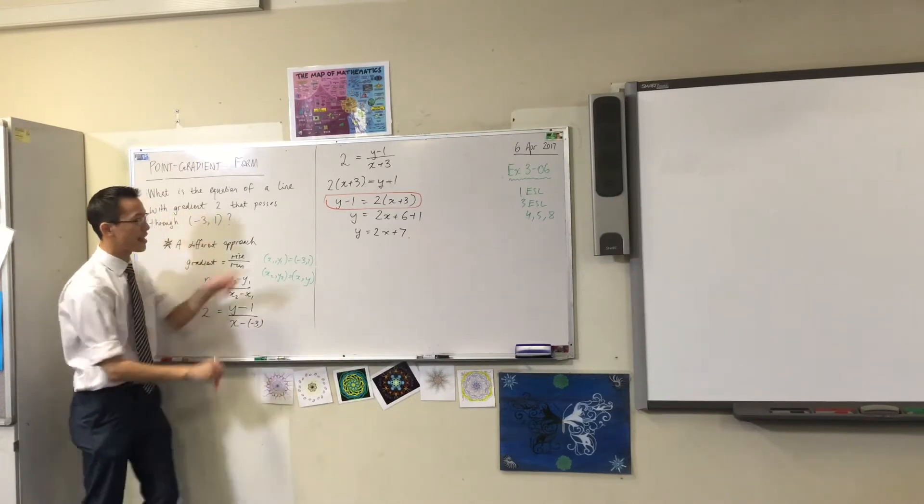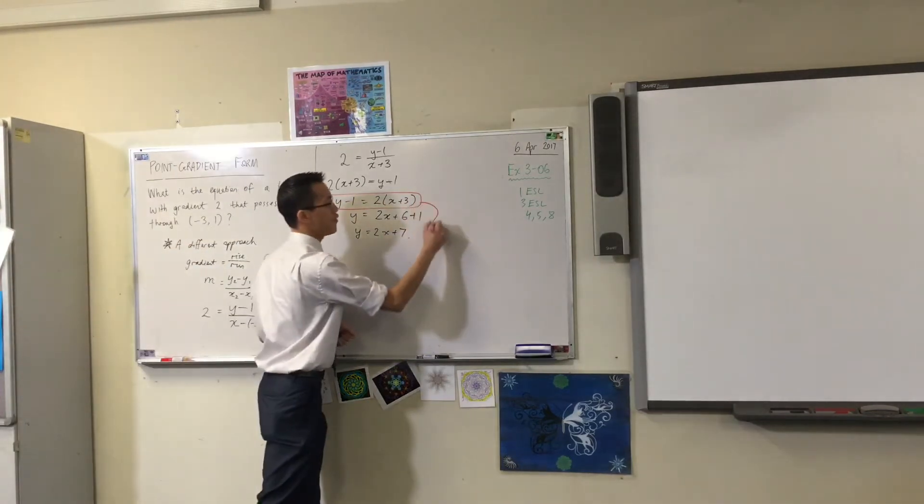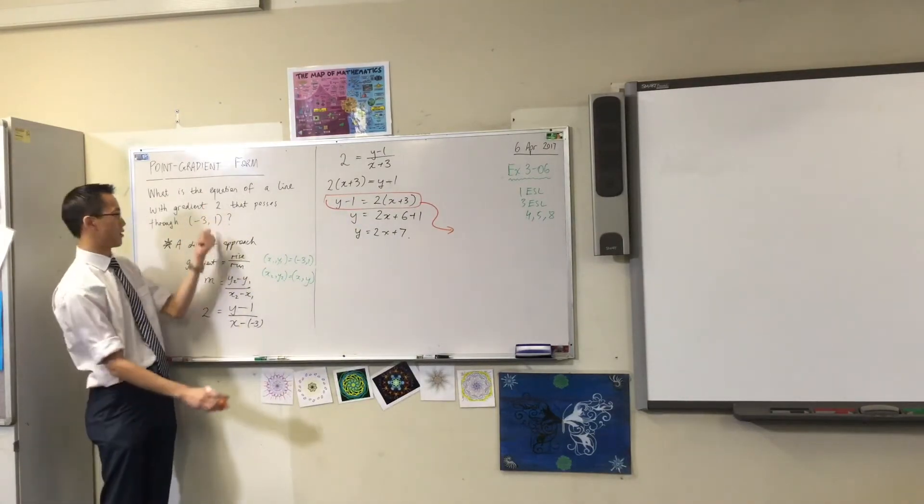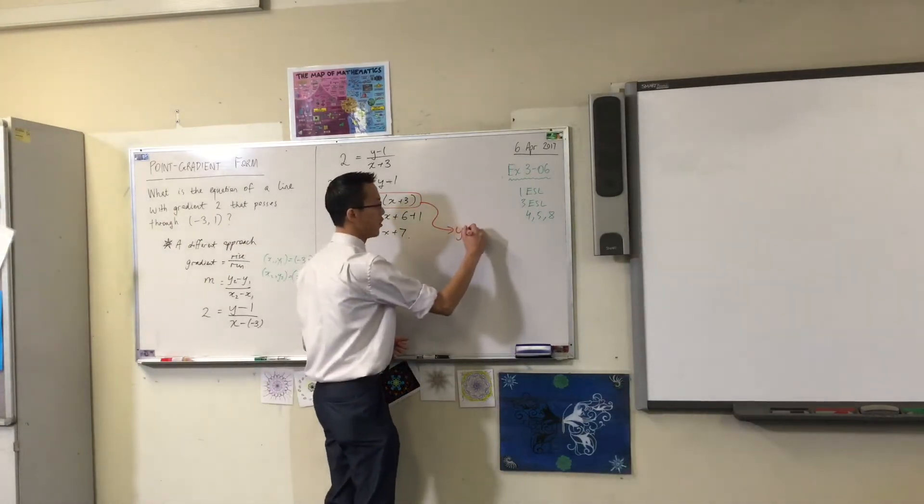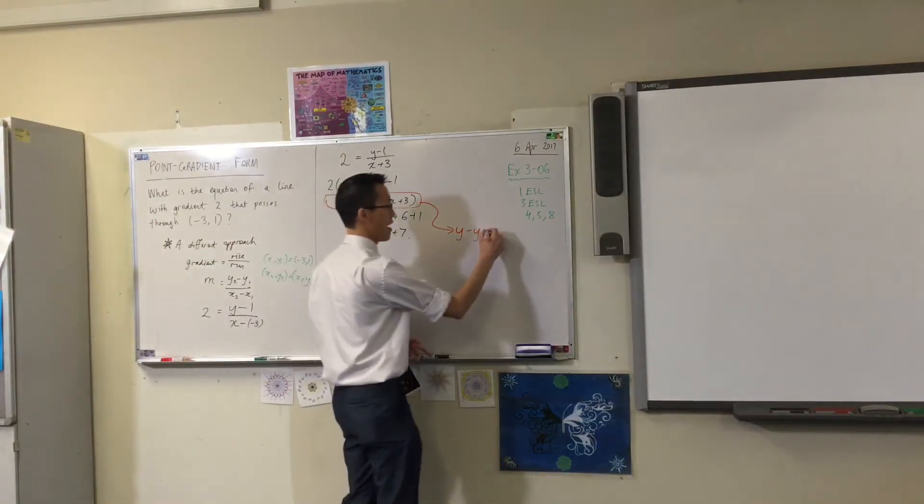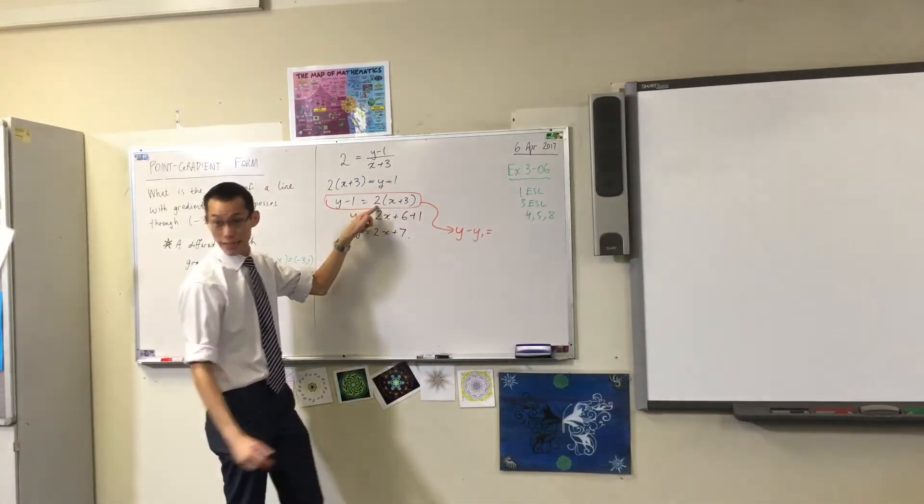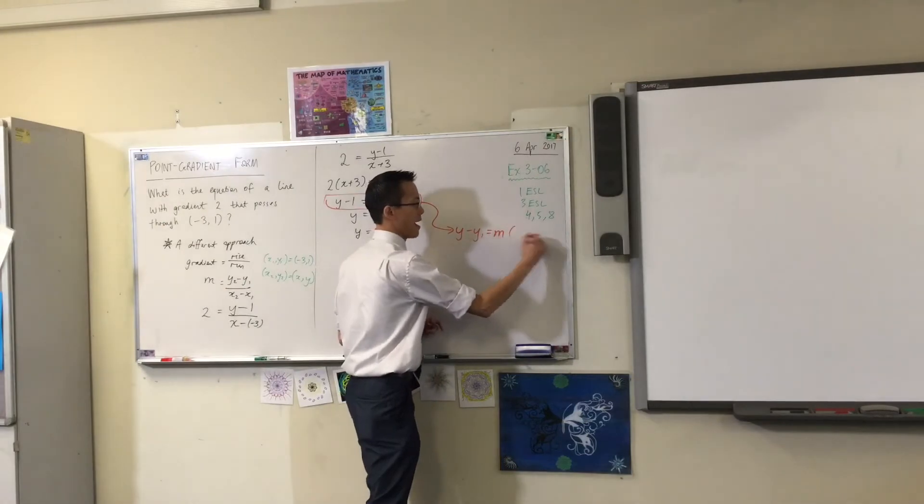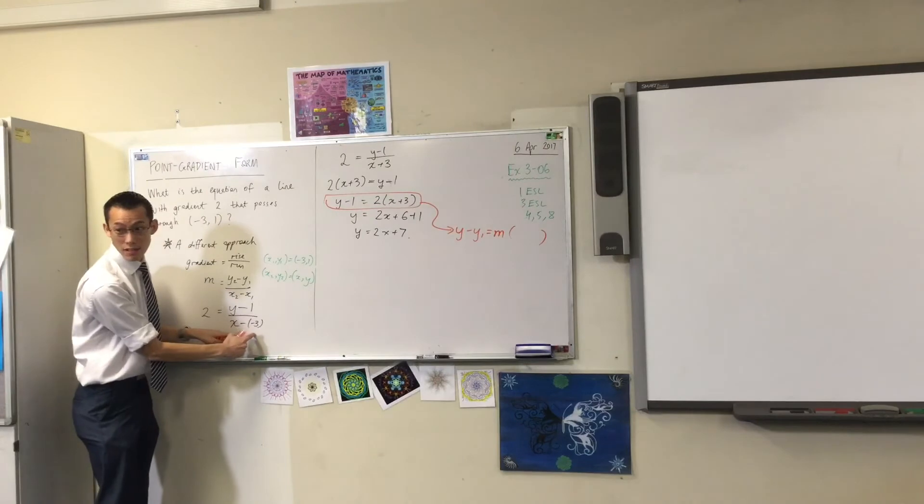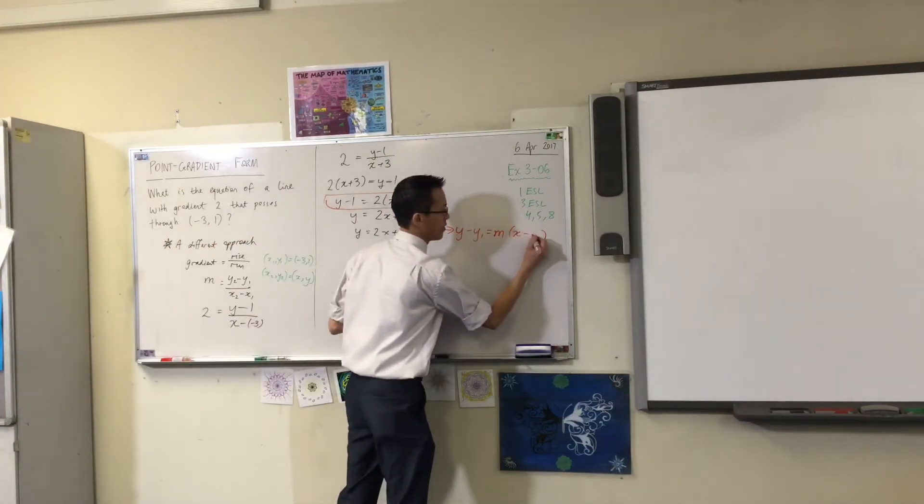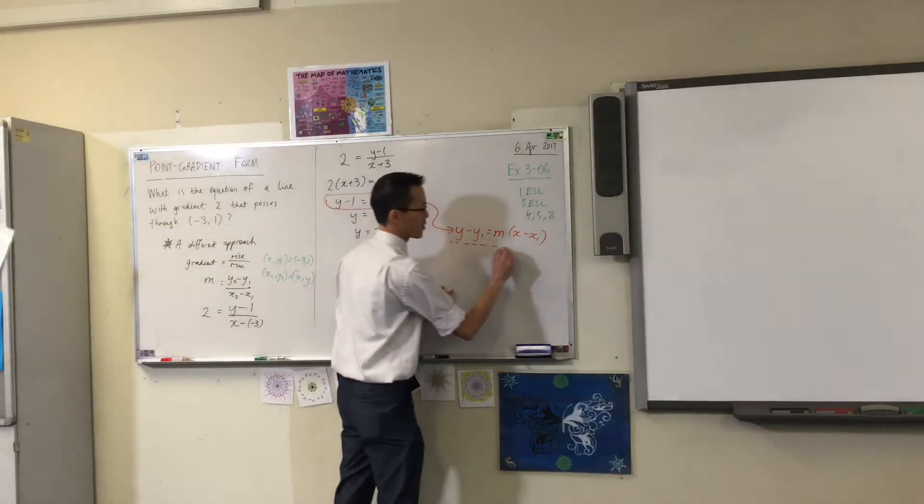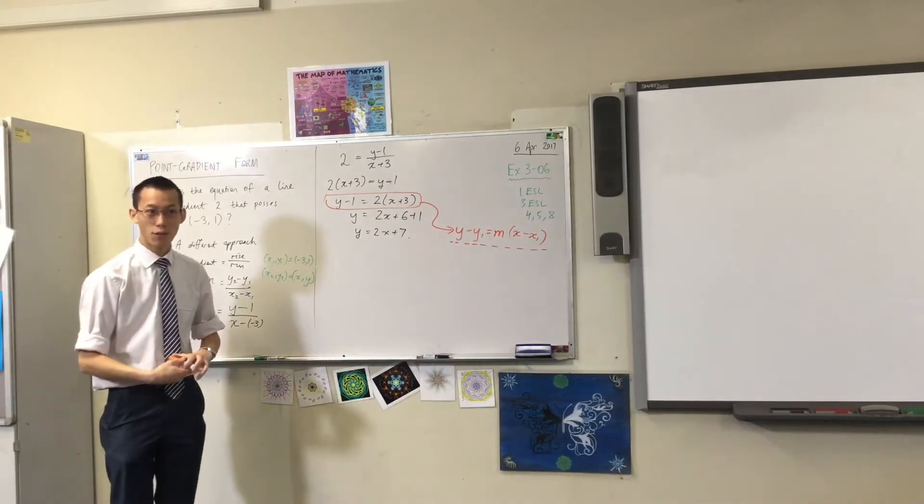So I can summarize this. I can say from this line, if you get given any gradient, not just 2, and any point, not just this point, I can say on the left-hand side, I've got y minus the y-coordinate. And on the right-hand side, I've got m. The gradient, that's m, outside of x, watch out, minus the x-coordinate. That guy right there. That, put a nice big colourful box around, is point gradient form.